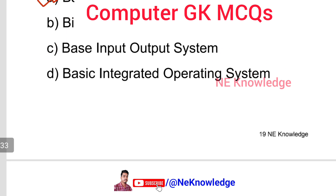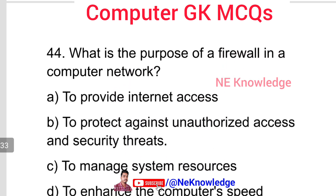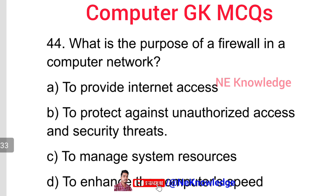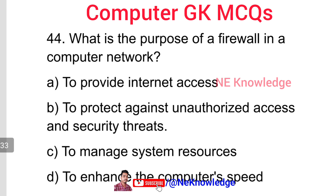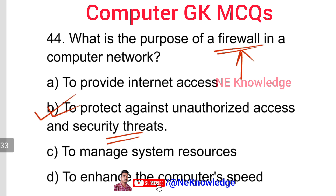Question number 44: What is the purpose of a firewall in a computer network? A firewall protects against unauthorized access and security threats. It blocks unauthorized access from the internet and other security threats. So option B is the correct answer.